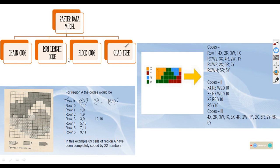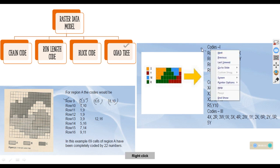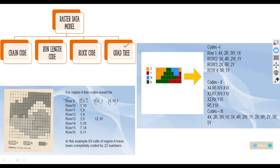Block code is represented row by row with feature labels. For example, in row one: the first four cells are labeled X (4X), then two cells are R (2R, the green feature), then three cells are W (3W, the blue feature), and finally one cell is X again (1X). That is how block code represents raster data.